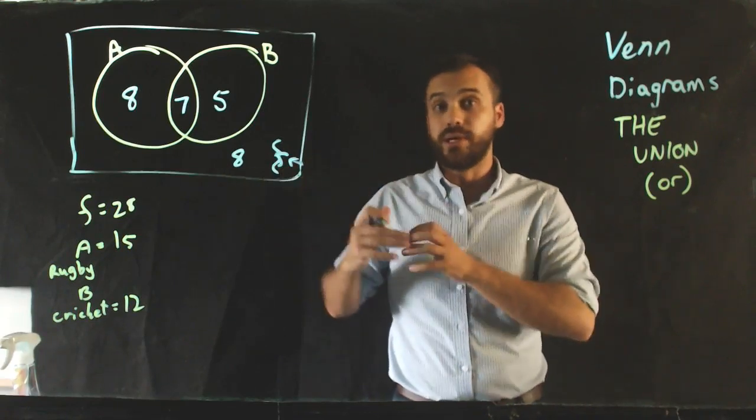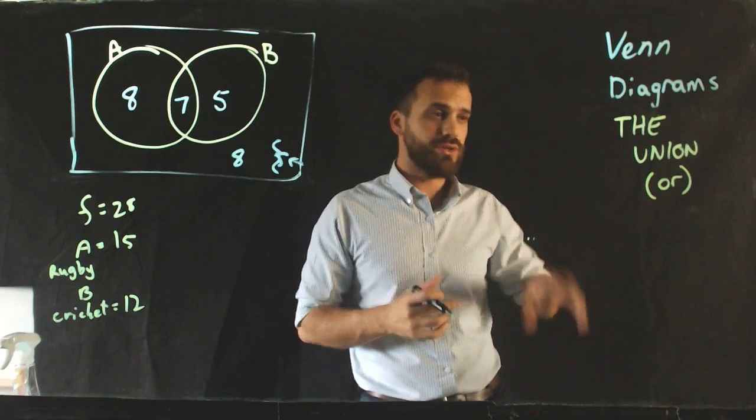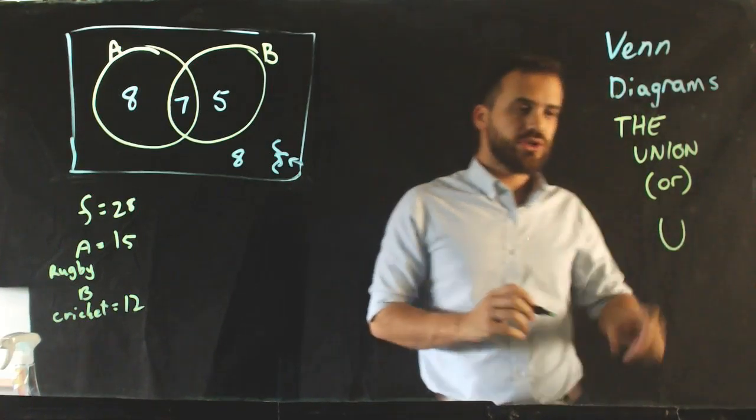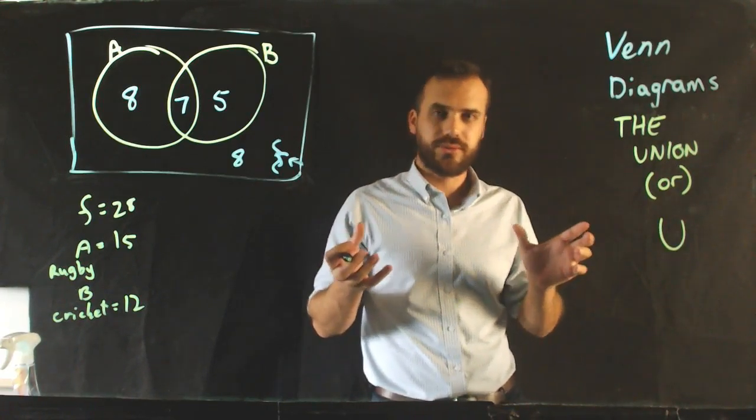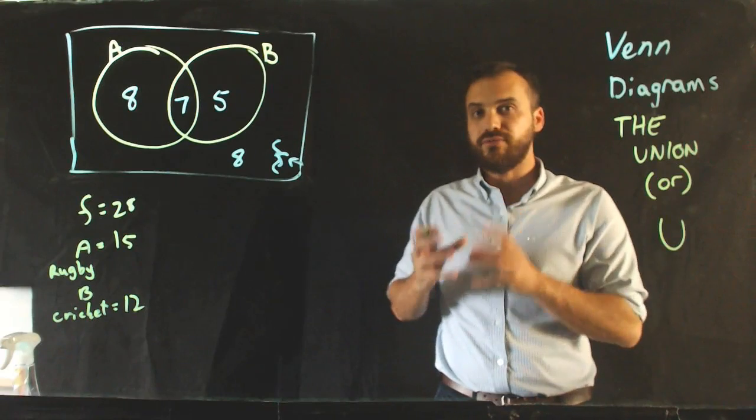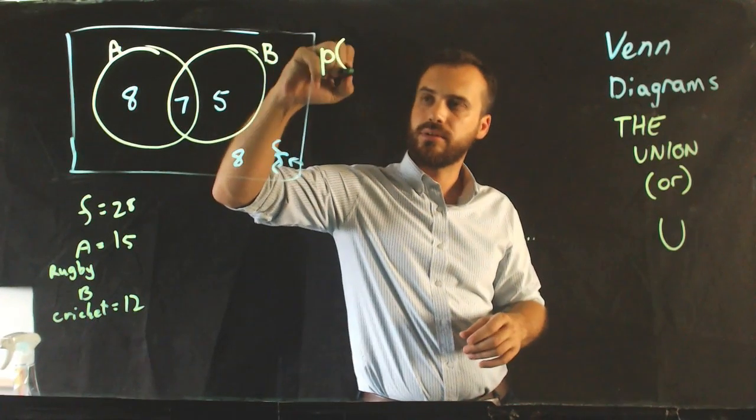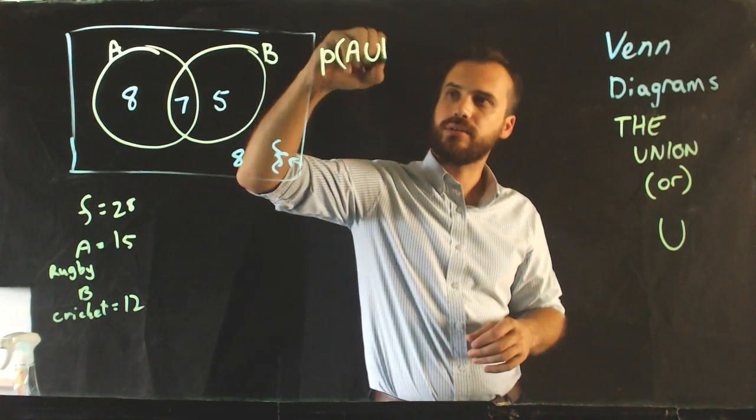A or B. Now, we've also got a handy symbol for the union, and it's very easy to remember. It just looks like a U. It's a pretty exaggerated kind of U. So if I was saying, what is the probability of A or B?